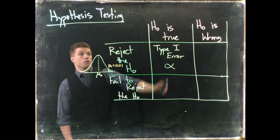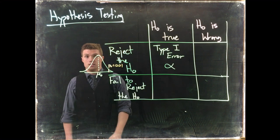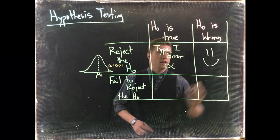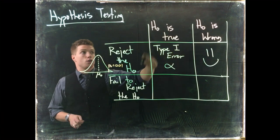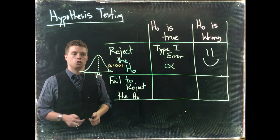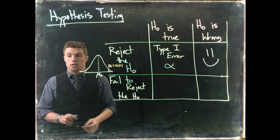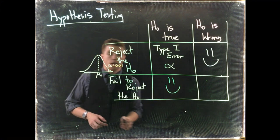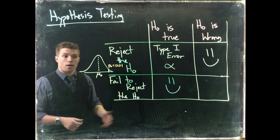If the null hypothesis is actually wrong and we reject the null hypothesis, that's a good decision — our data correctly supported that the null hypothesis is wrong. Another correct decision is if the null hypothesis is true and our data fails to reject the null hypothesis — our data is not showing that the null hypothesis is false because it isn't false; it is in fact true.